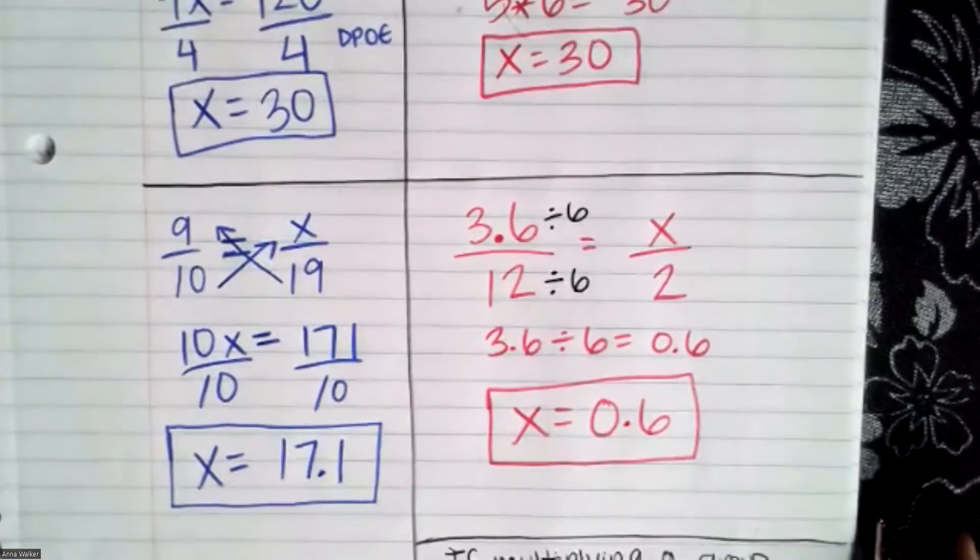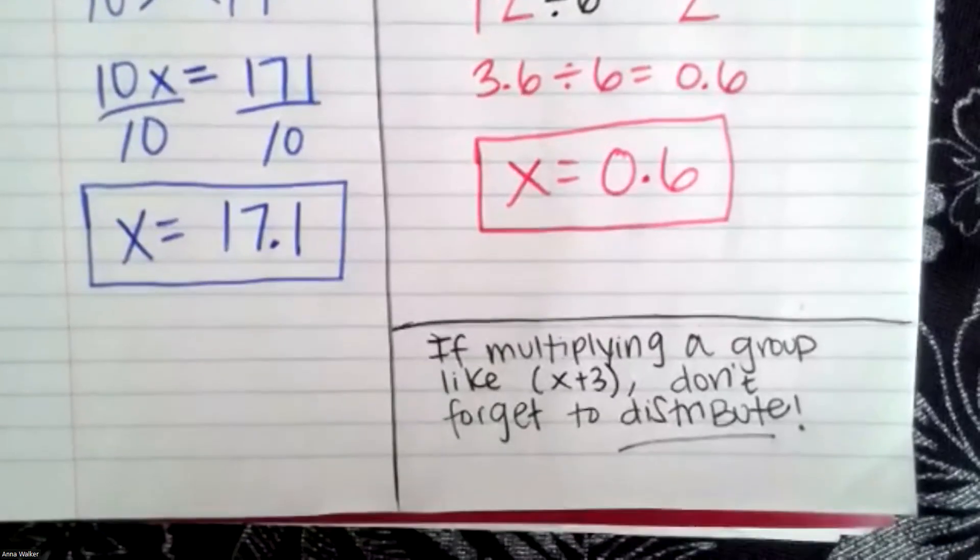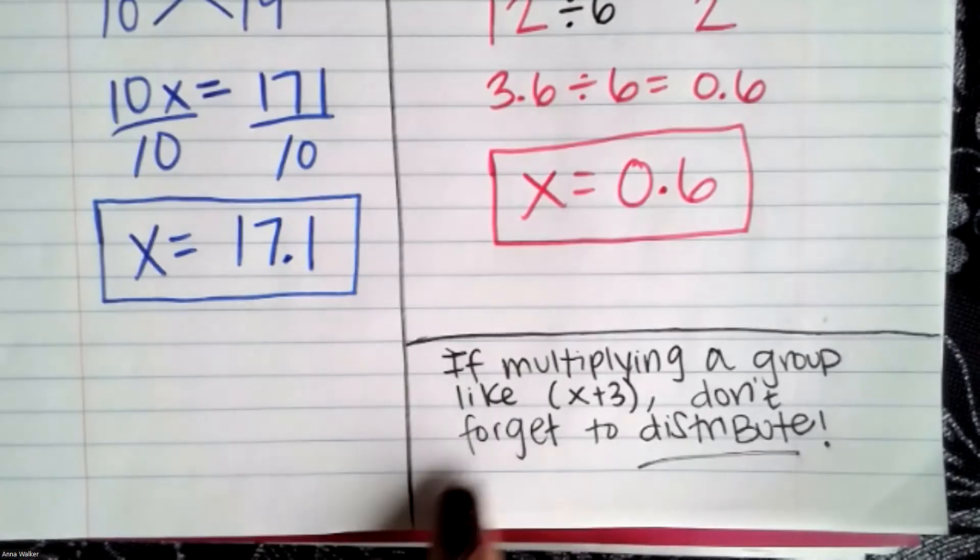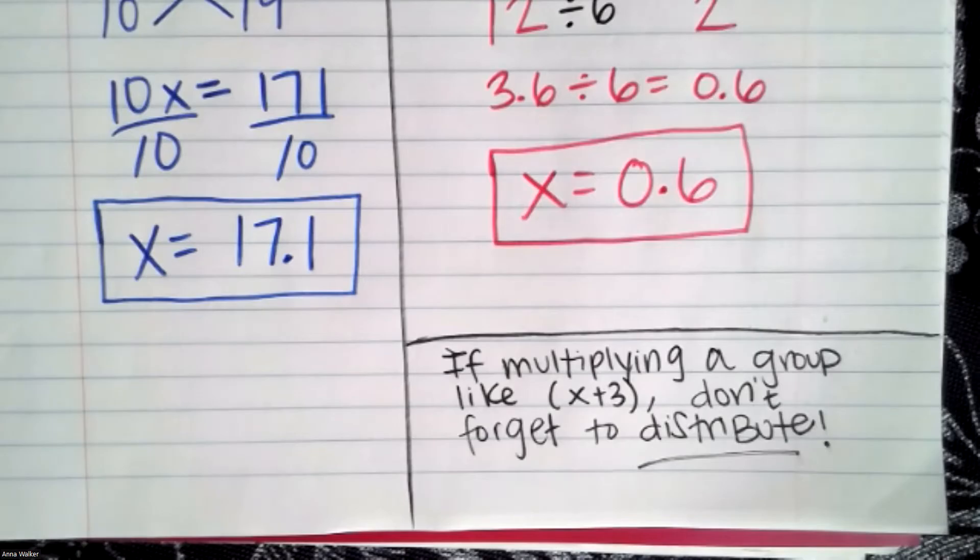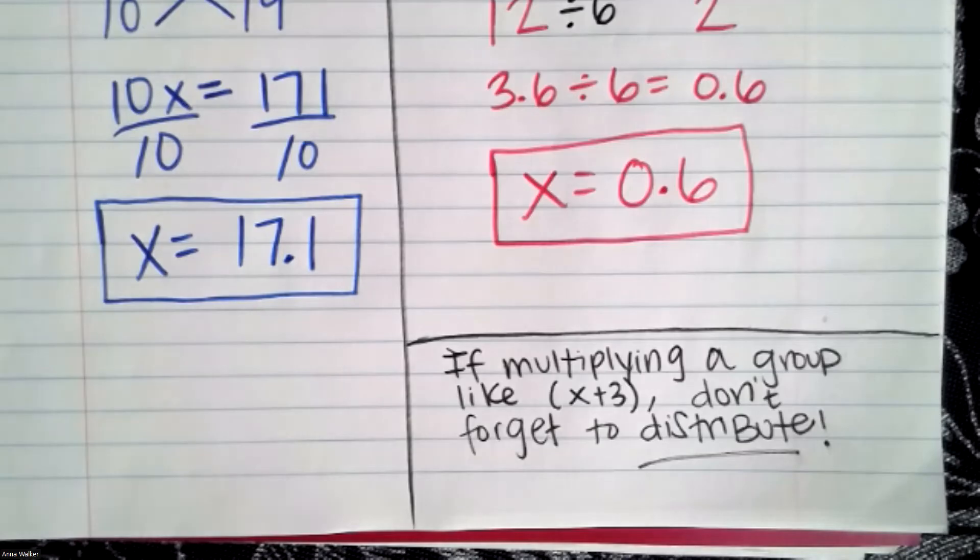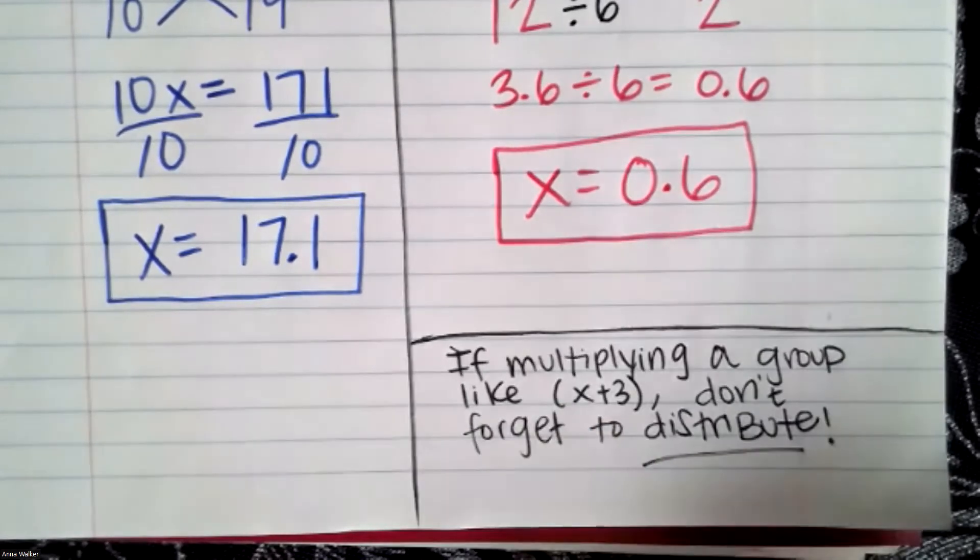The other piece of advice I'm going to leave you before I give you practice questions is sometimes in proportions it's not just necessarily a number. So if you're multiplying by a group like X plus three, you cannot forget the distributive property. That is basically going to make your cross multiply equation a two-step equation. Those problems are a little bit more complex. So don't forget if one of the things in the proportion is a group, like it has parentheses, you're going to need to distribute.